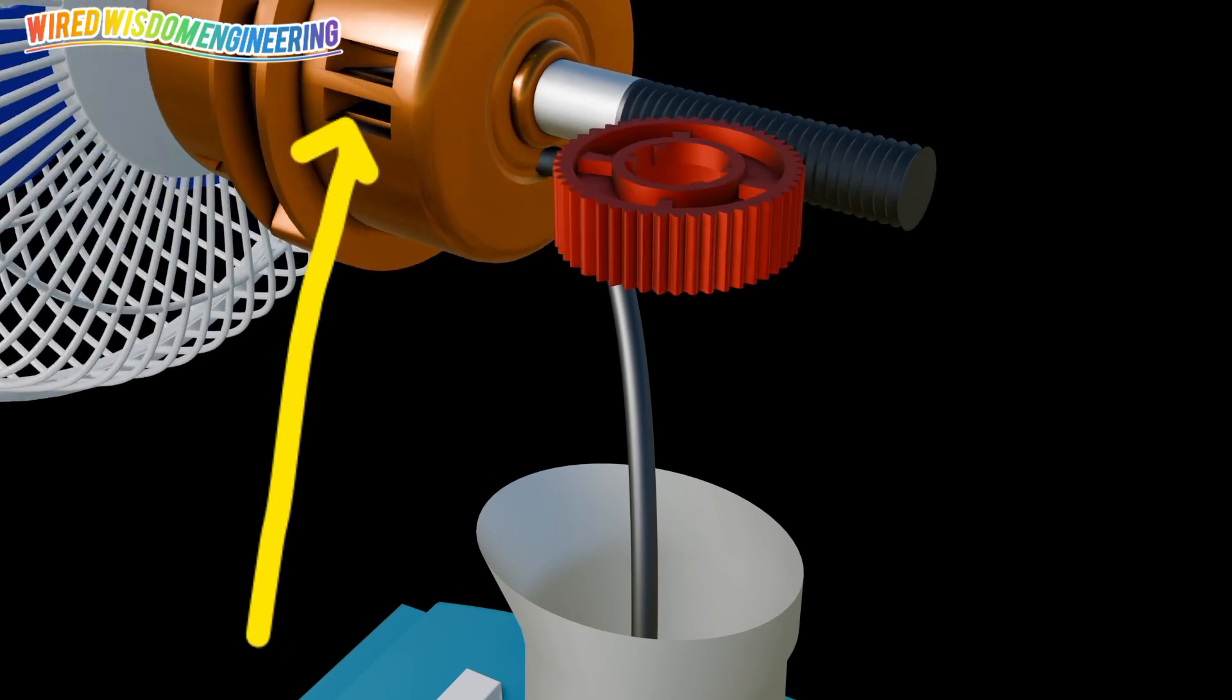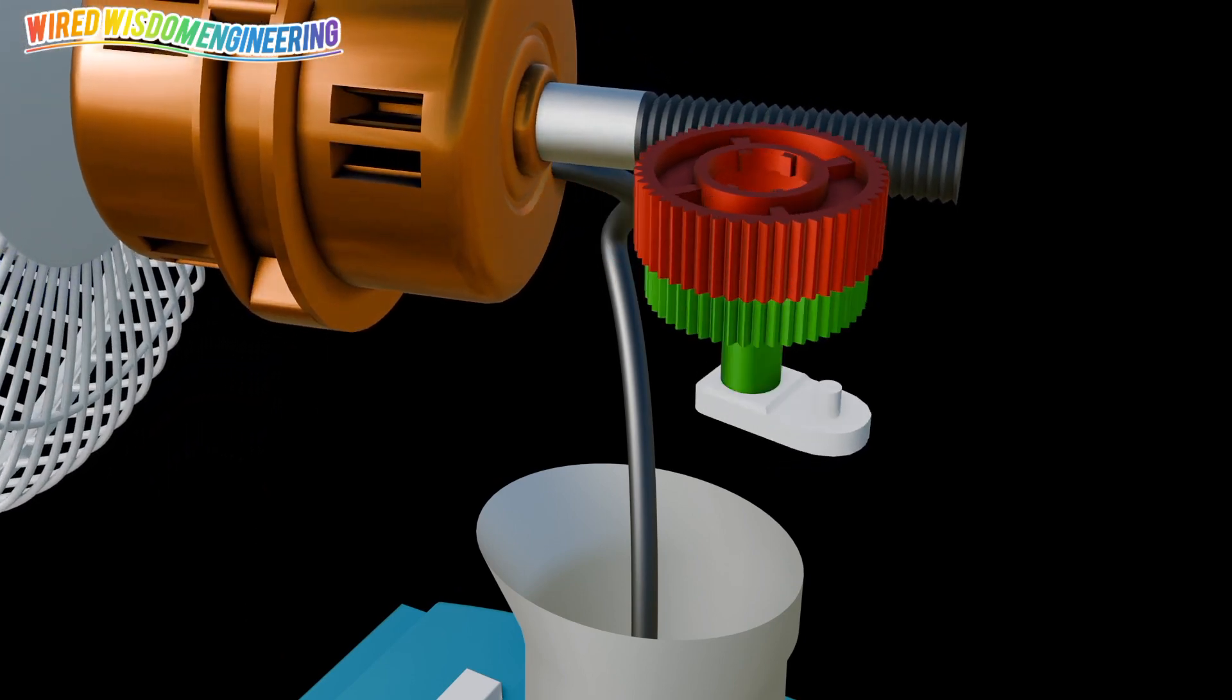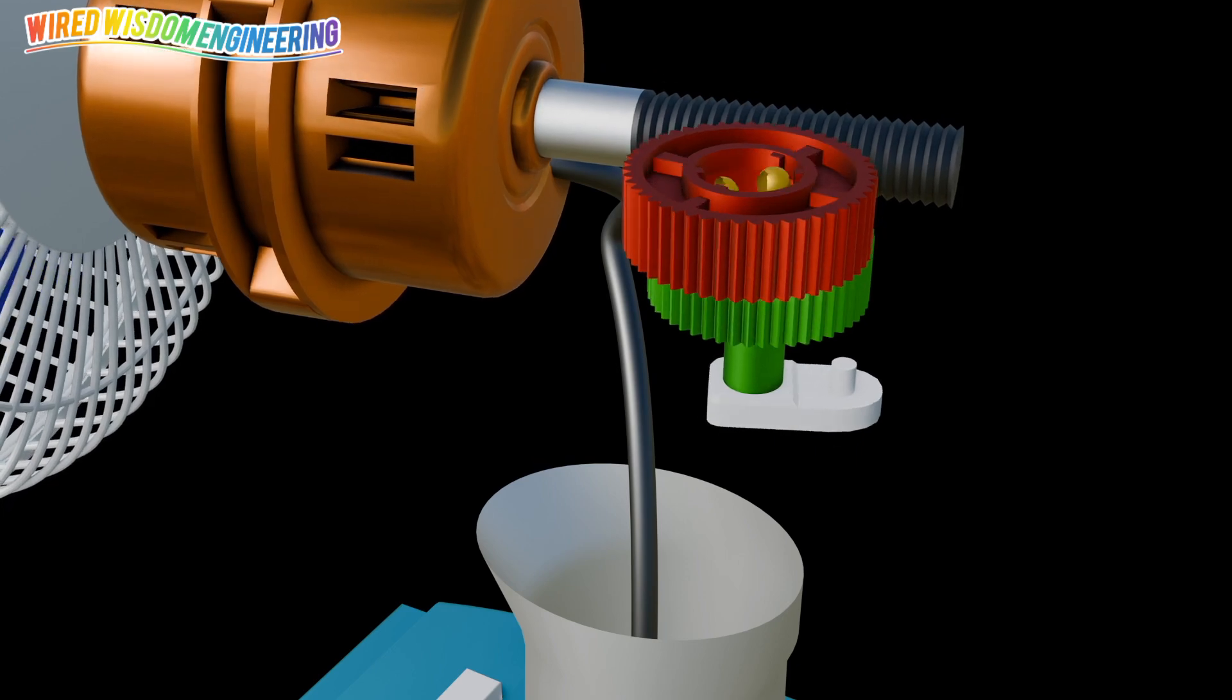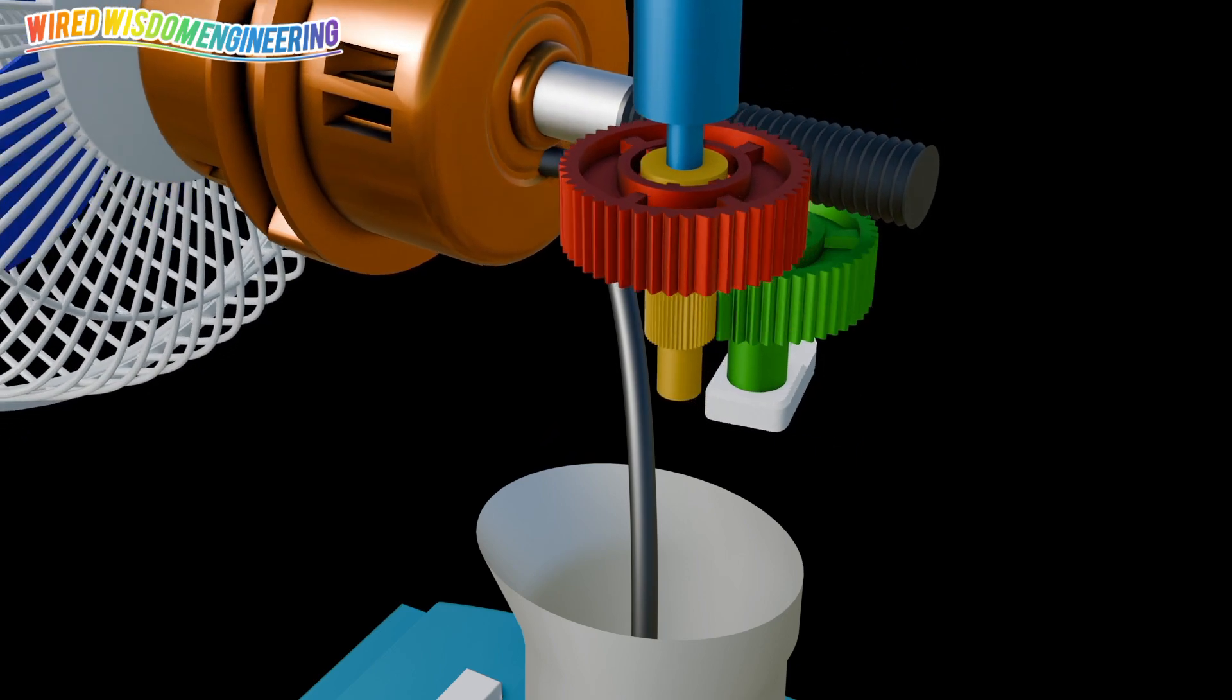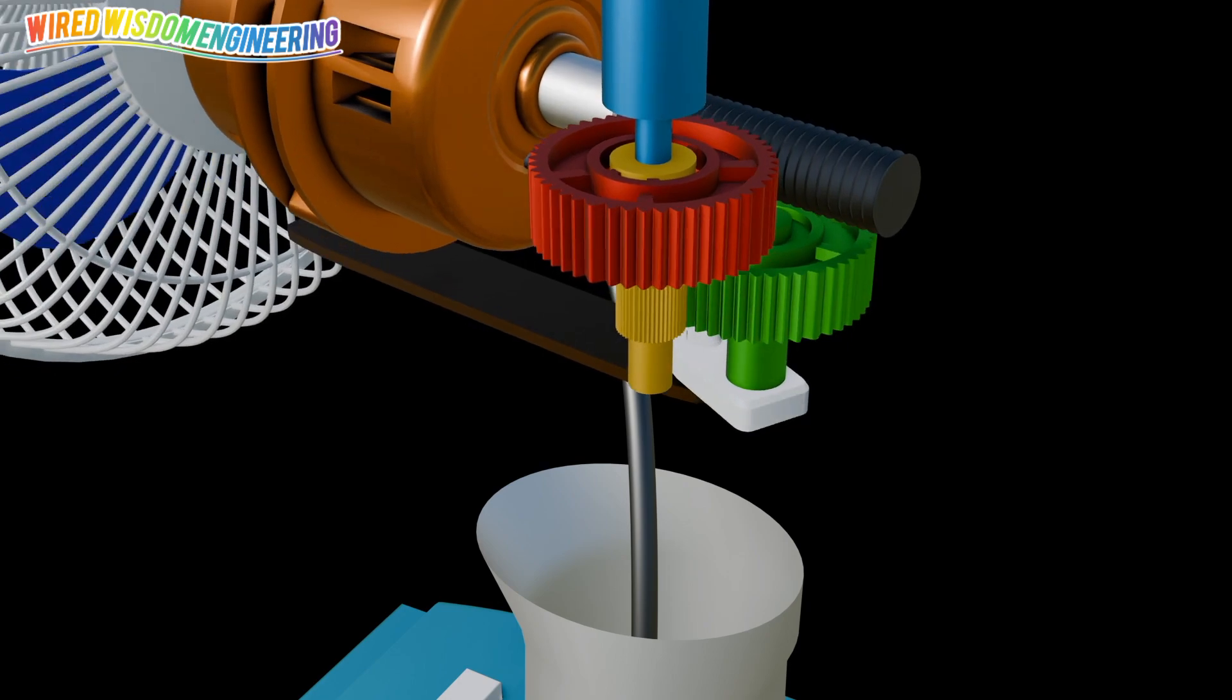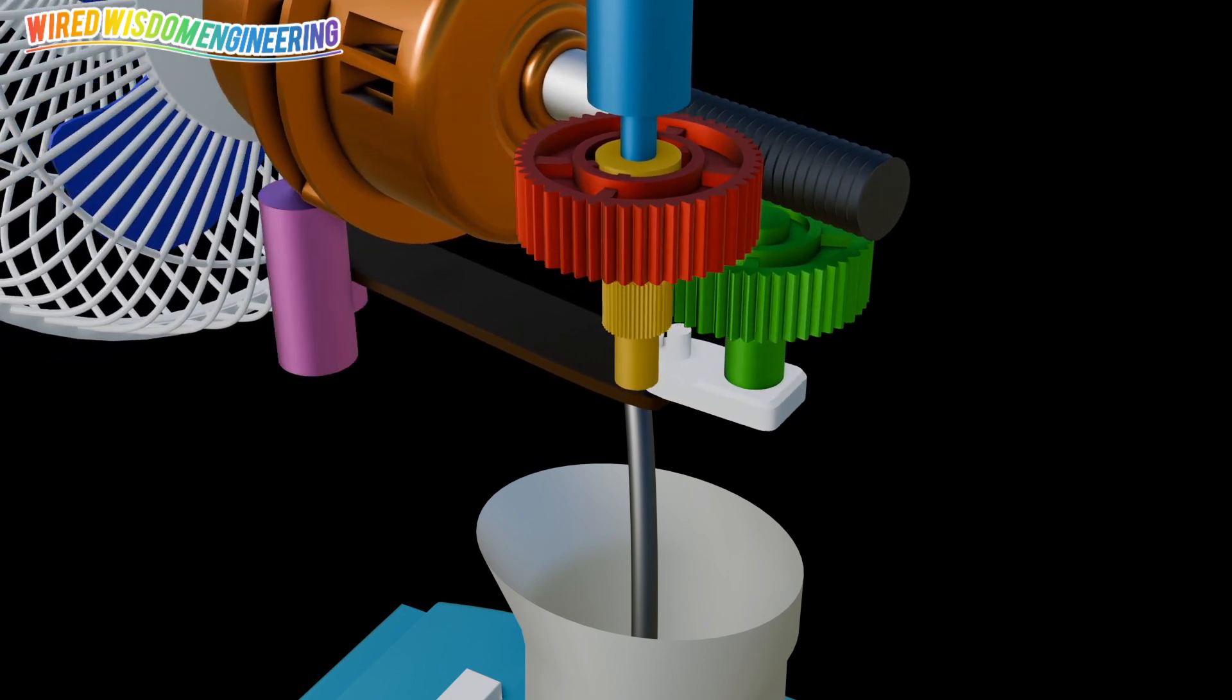The electric motor is the core of the oscillating fan. It spins the fan blades, creating airflow. The motor is typically an alternating current motor, which is commonly used in household fans.